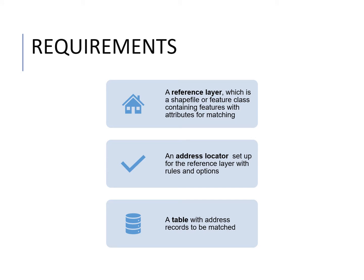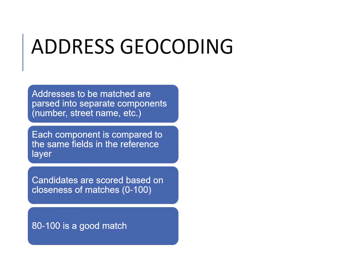The requirements of geocoding are: a reference layer, which is the shapefile or feature class containing features with attributes for matching; an address locator set up for the reference layer with rules and options; and a table with address records to be matched. Address geocoding takes addresses and parses them into separate components like street name and number.